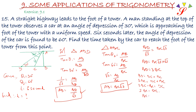So if DC needs 6 seconds, then the car will need 6 divided by 2, that is 3 seconds to reach from point C to B.